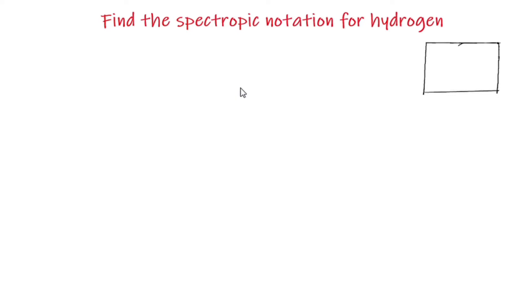Hi there and welcome back. Let us find the spectroscopic notation for hydrogen. The first step is to open the periodic table and locate hydrogen.